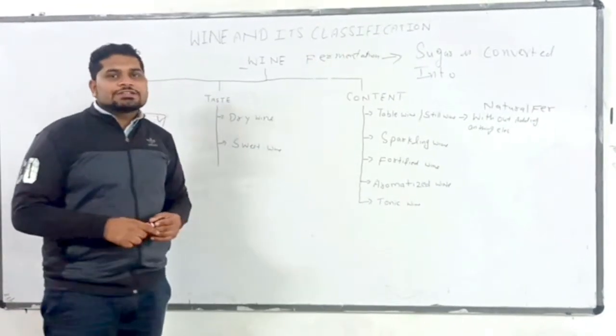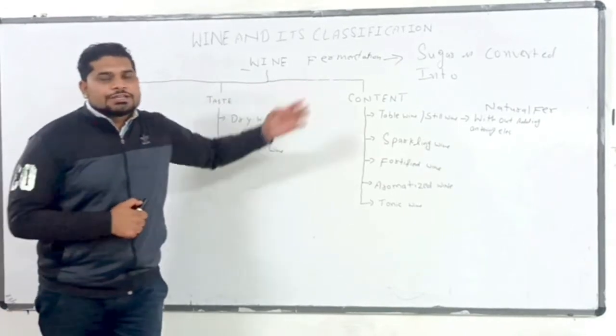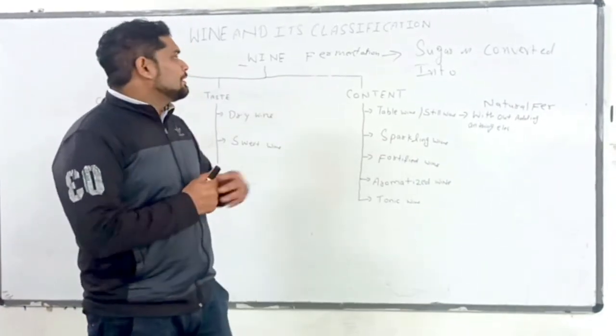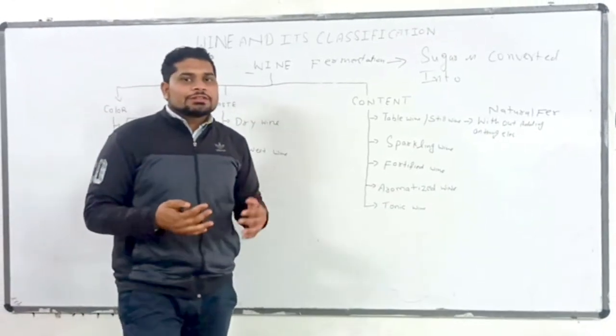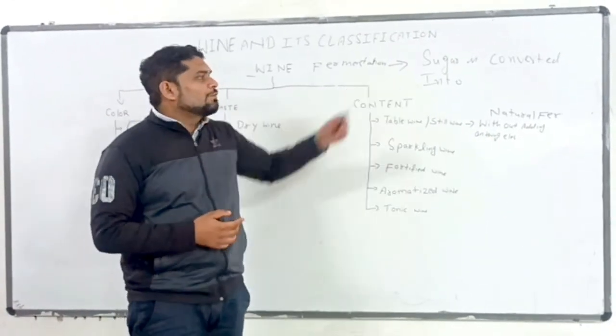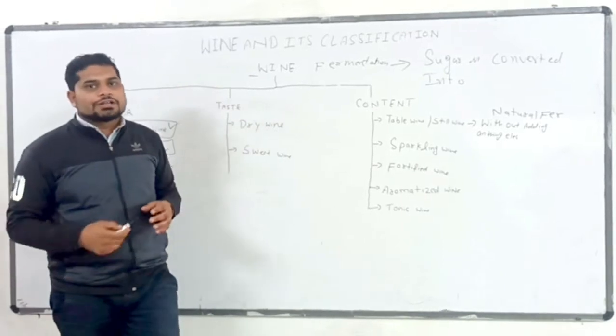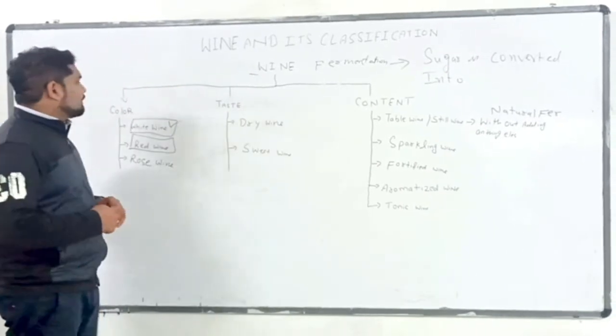At that point, the yeast dies because yeast is a single cell and it requires food to live. The work of yeast is to convert sugar into ethyl alcohol.